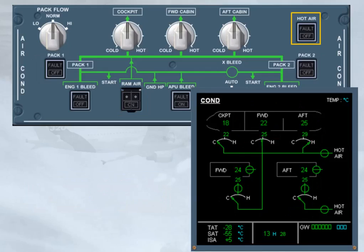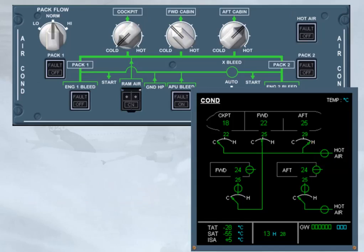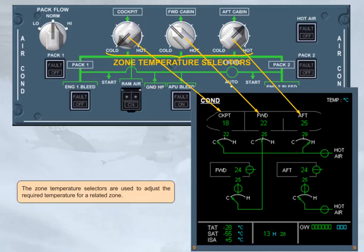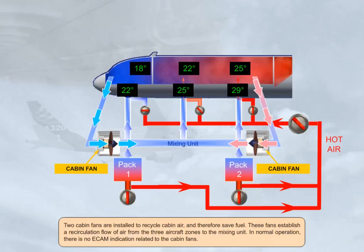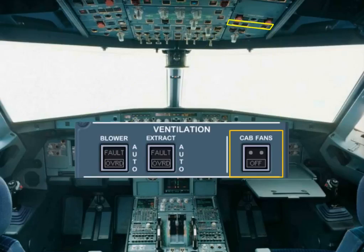The hot air push button switch controls the hot air valve. In the example shown, the valve is open. The zone temperature selectors are used to adjust the required temperature for a related zone. Two cabin fans are installed to recycle cabin air and therefore save fuel. These fans establish a recirculation flow of air from the three aircraft zones to the mixing unit. In normal operation, there is no ECAM indication related to the cabin fans. The cabin fans push button switch on the ventilation panel controls the cabin fans. This push button switch can be used to switch the fans off in response to an ECAM procedure.